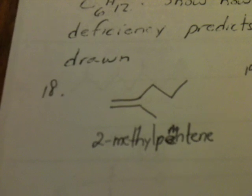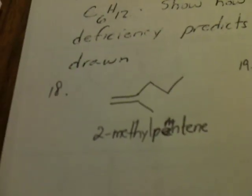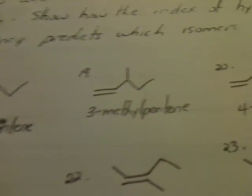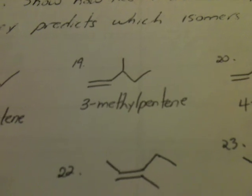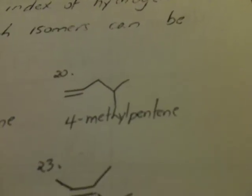Now we move down to a pentene. We've used up all the hexene possibilities. So our 18th isomer is 2-methylpentene. Then we move the group to the third position, so it's 3-methylpentene, and lastly 4-methylpentene.